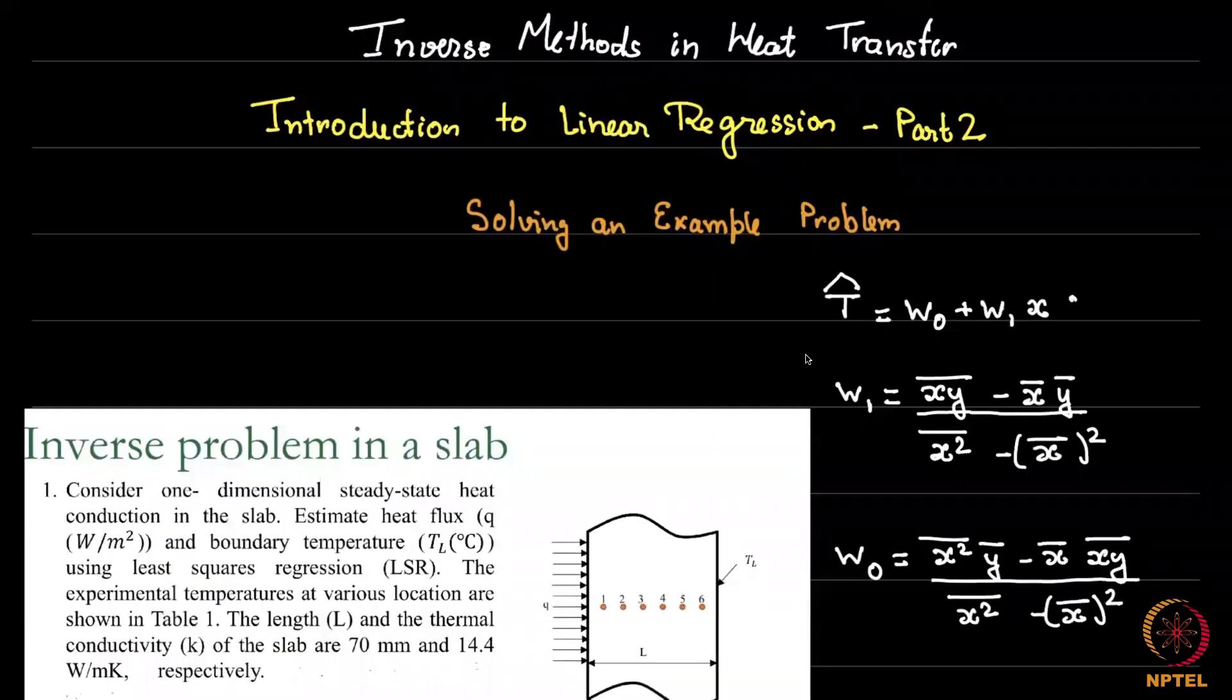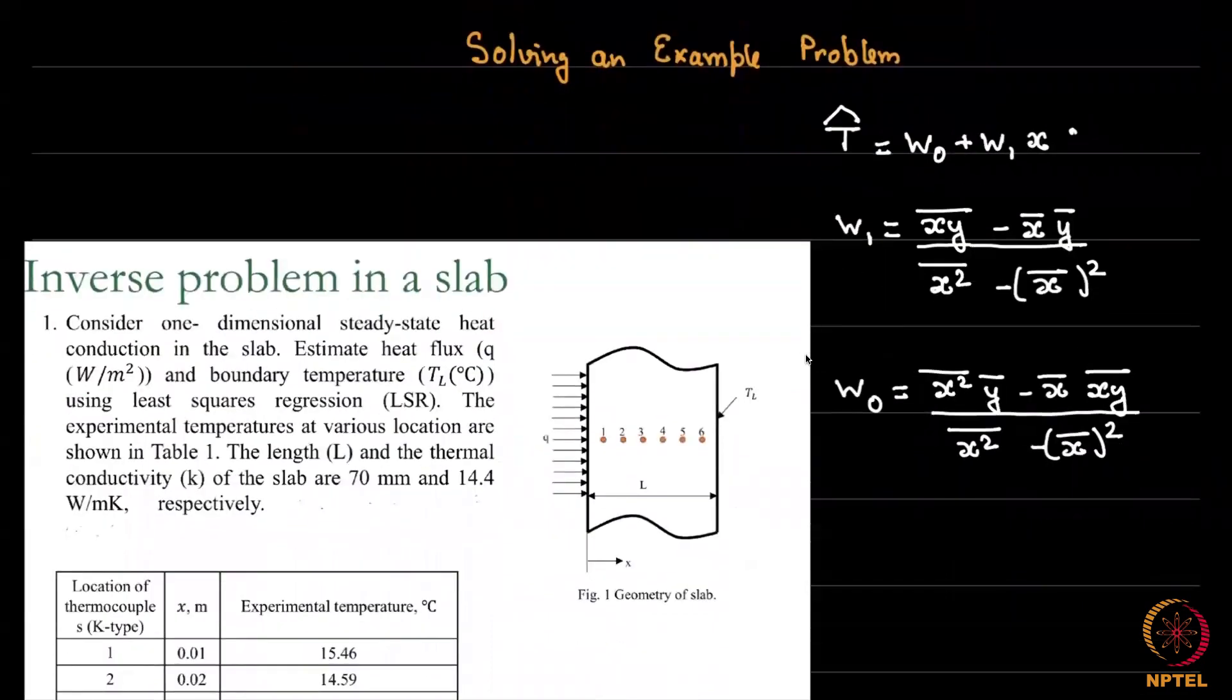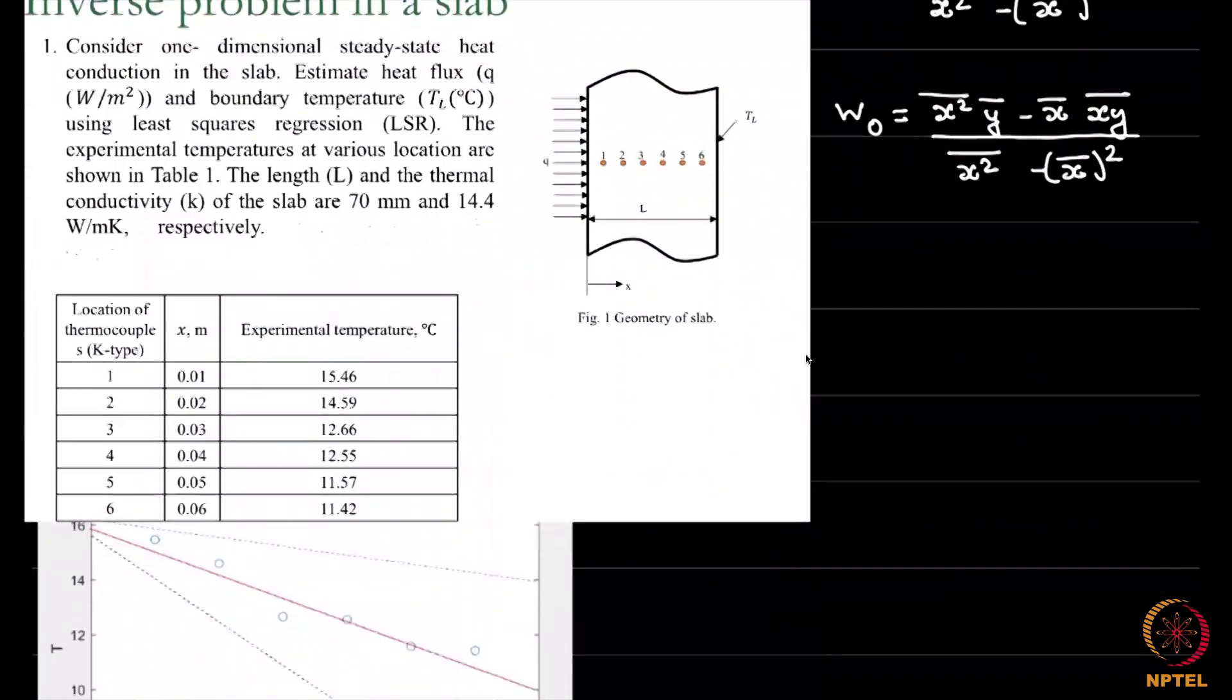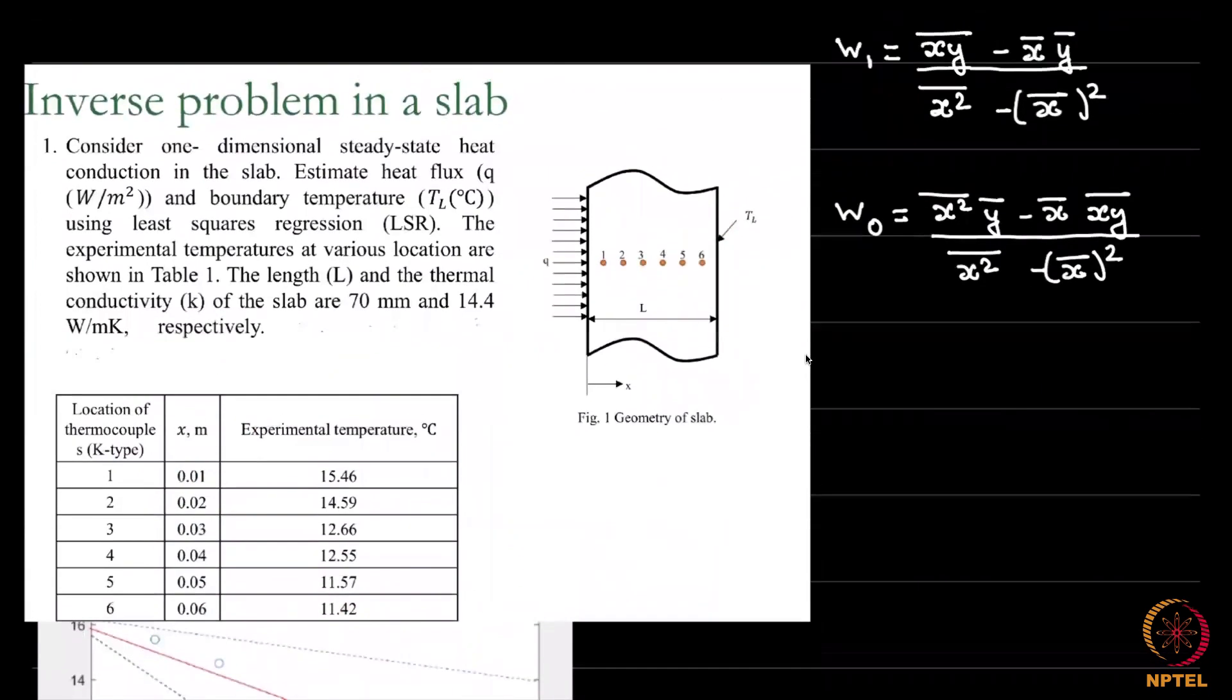Welcome back. In the previous video we derived some simple expressions for the linear model. Recall that we were looking at the inverse problem in a slab where we are given thermocouple measurements at a few locations and we are asked to find out the actual temperature. So what you are asked to estimate is the heat flux and the boundary temperature.